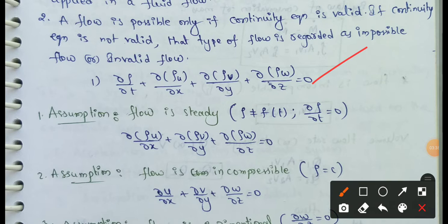The continuity equation is: ∂ρ/∂t + ∂(ρu)/∂x + ∂(ρv)/∂y + ∂(ρw)/∂z = 0.